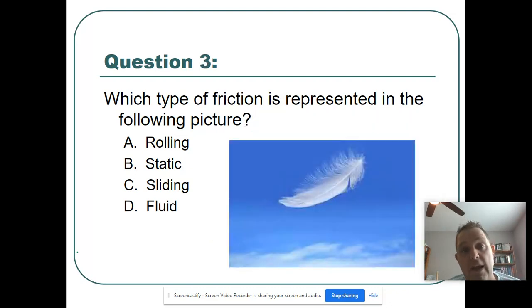Surprise! We're looking at another type of friction. This is a feather, obviously. And what is it in? So we can talk about what type of friction it is. And let's look at this picture as it's falling from the sky. So think about that, falling from the sky.